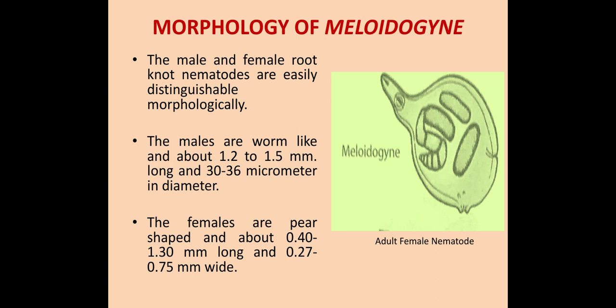Morphology of Melidogyn: The male and female root knot nematodes are easily distinguishable morphologically. The males are worm-like, about 1.2–1.5 mm long and 30–36 micrometers in diameter. The females are pear-shaped, about 0.40–1.30 mm long and 0.27–0.75 mm wide. The image shows an adult female nematode which is pear-shaped.